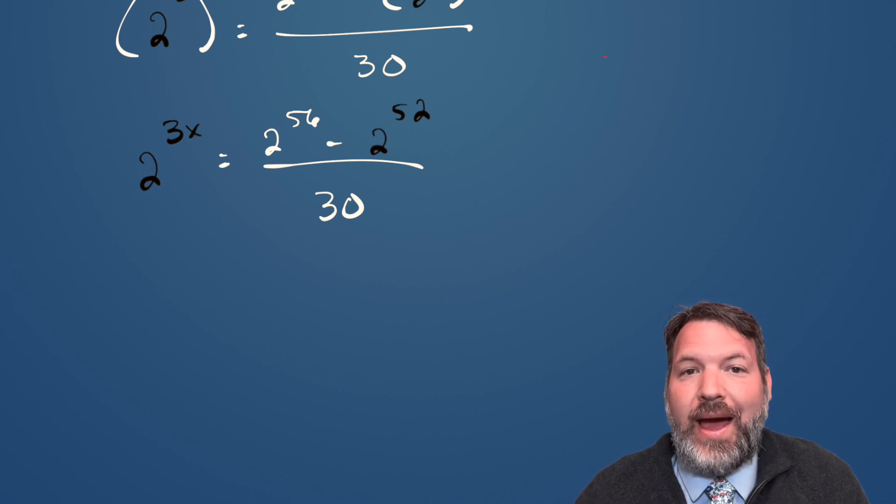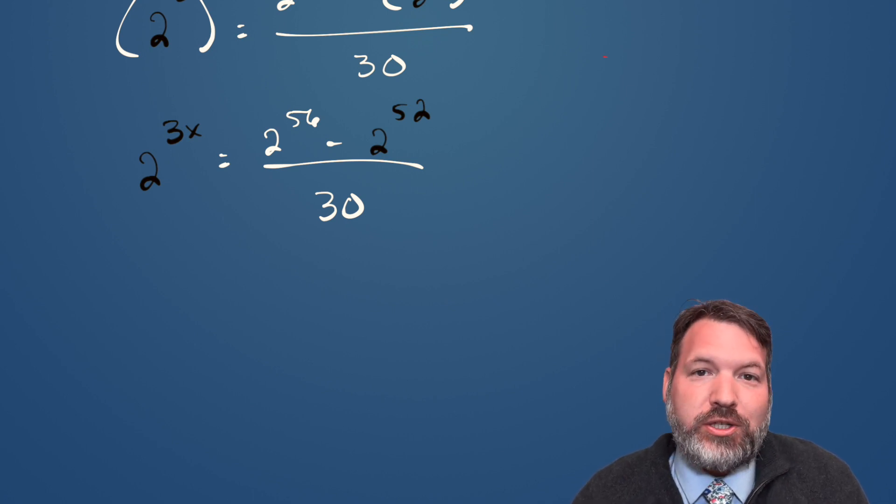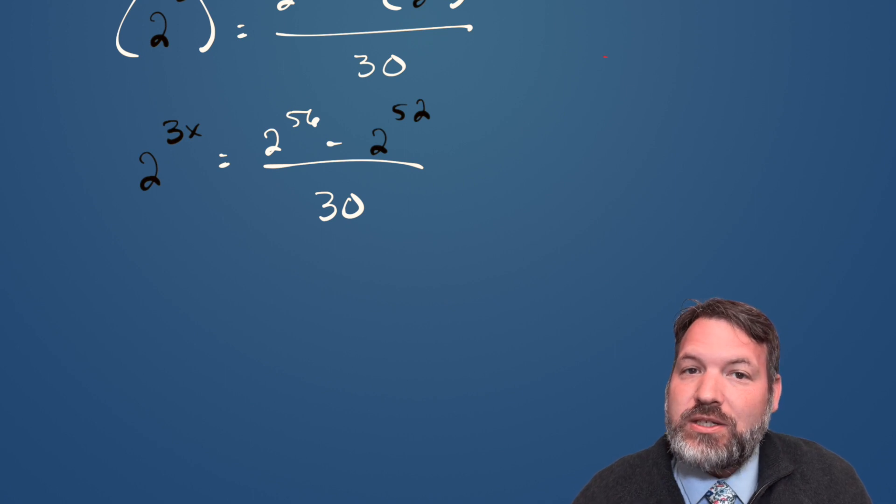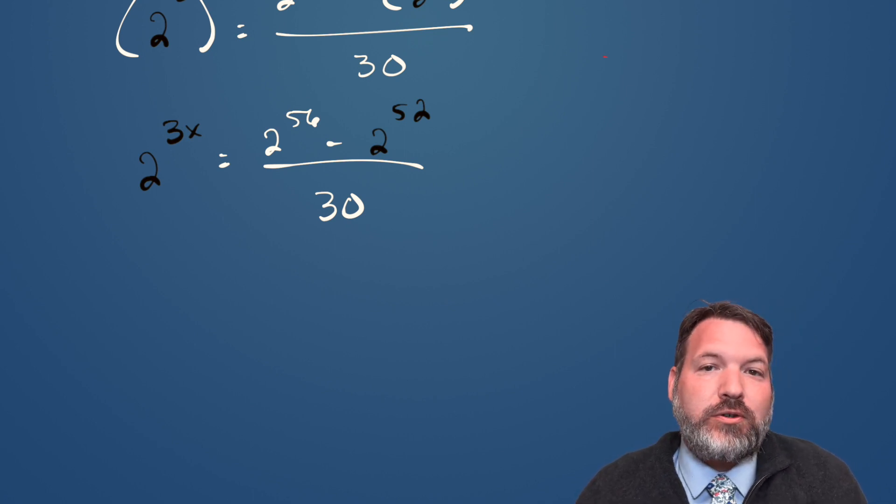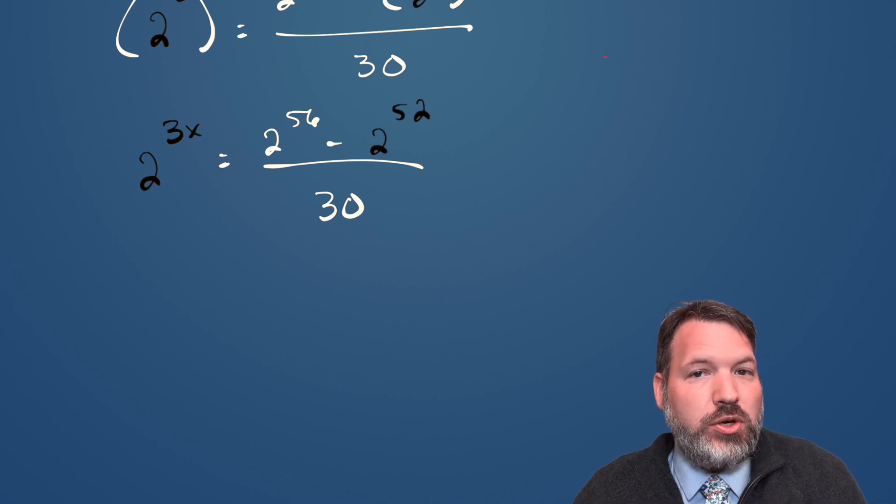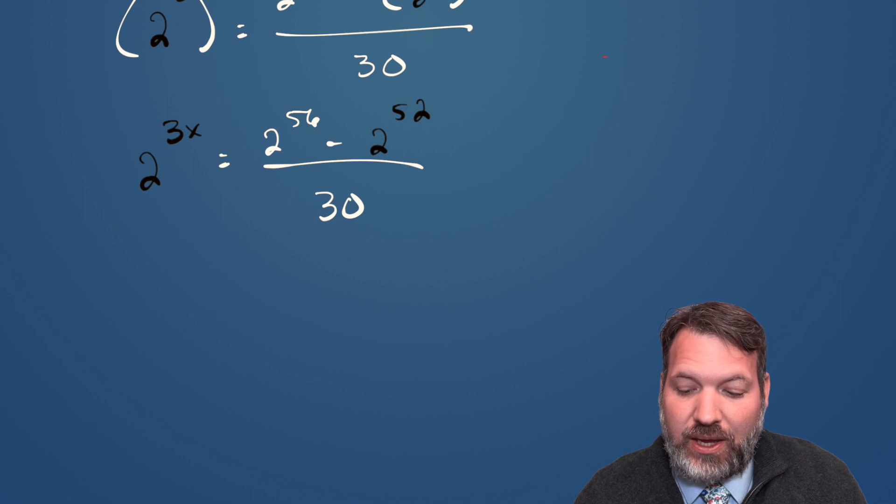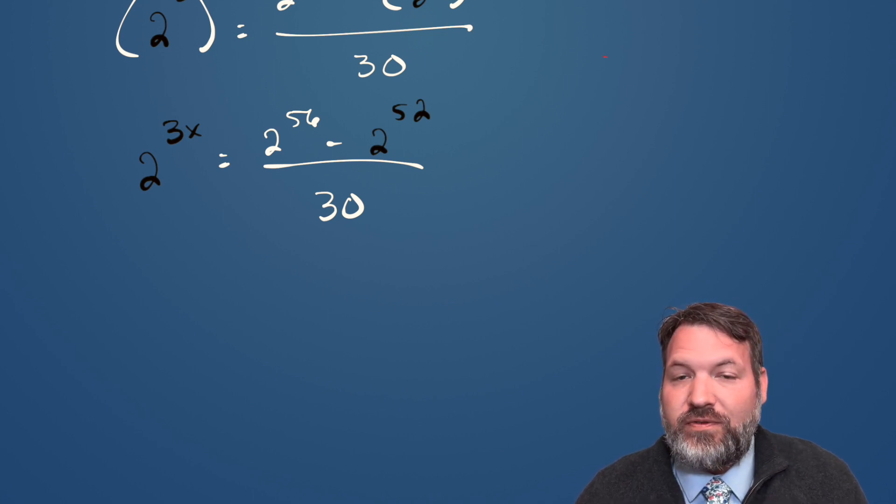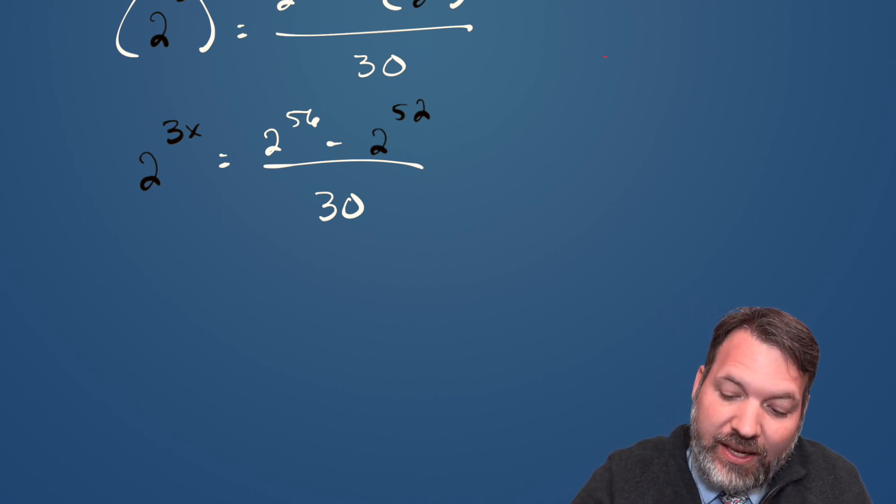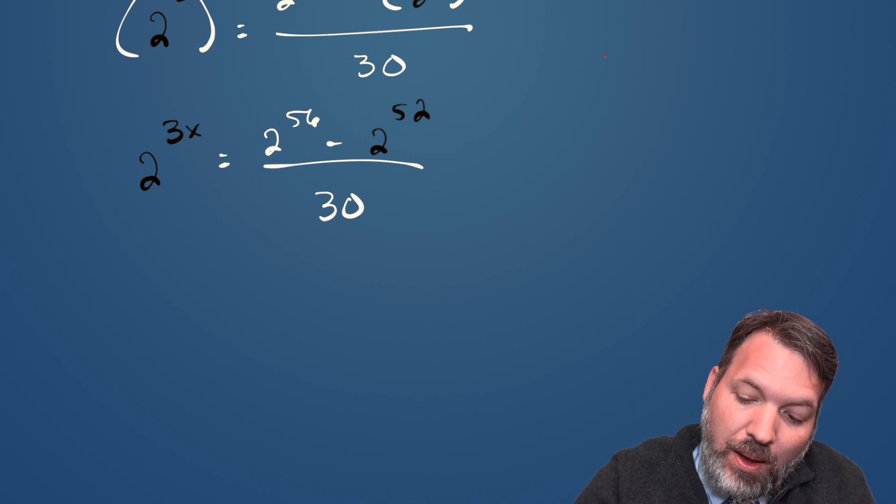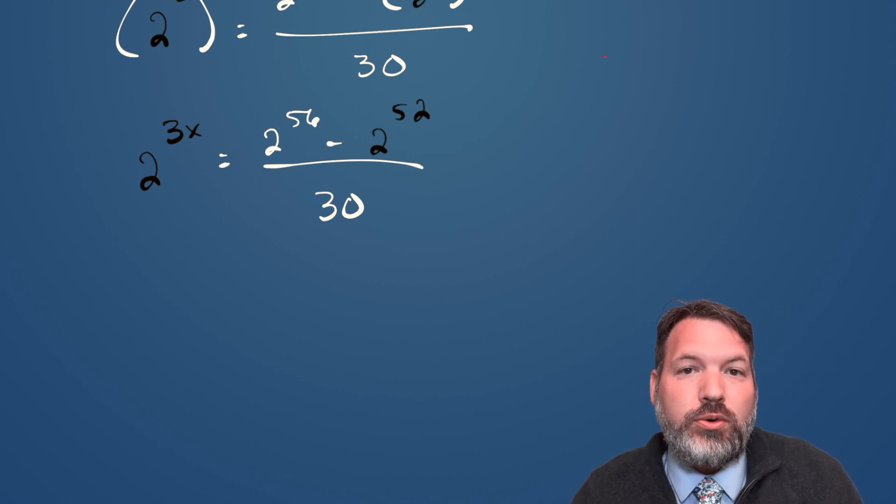but no special rules for adding or subtracting powered expressions with the same base. What we can do with those expressions, though, is factor out whatever the smallest power is that they have in common. In other words, 2 to the 56th is literally 56 2s all multiplied together. 2 to the 52nd is 52 2s multiplied all together. And so clearly, these two terms must have those 52 2s in common.